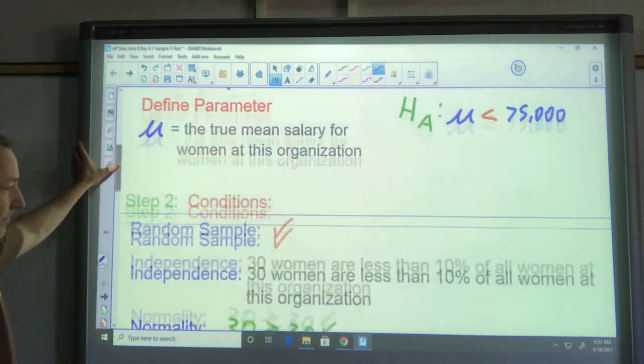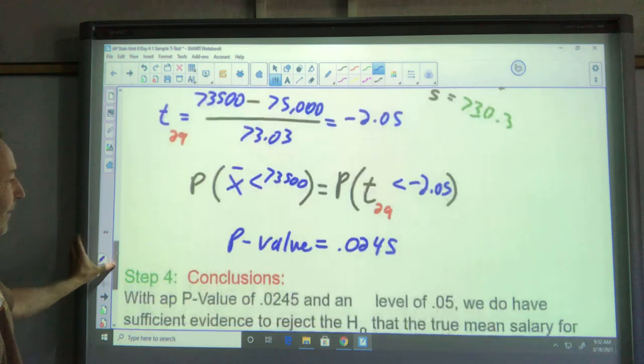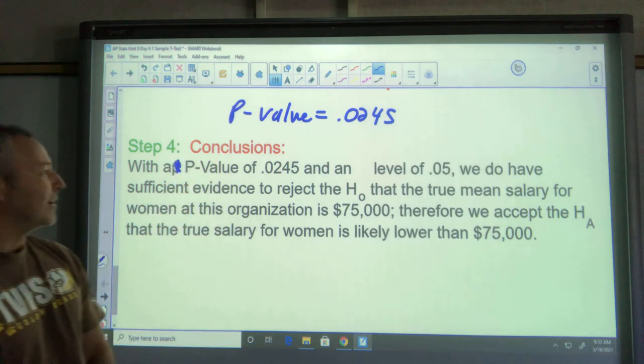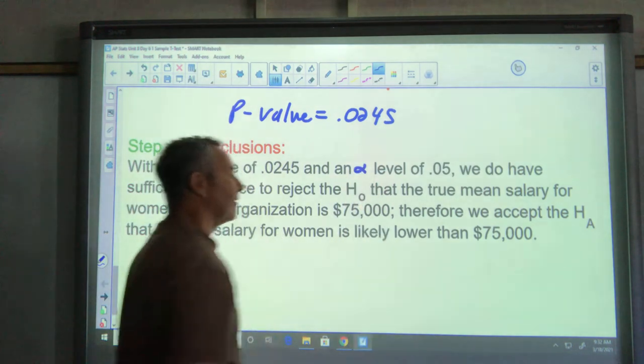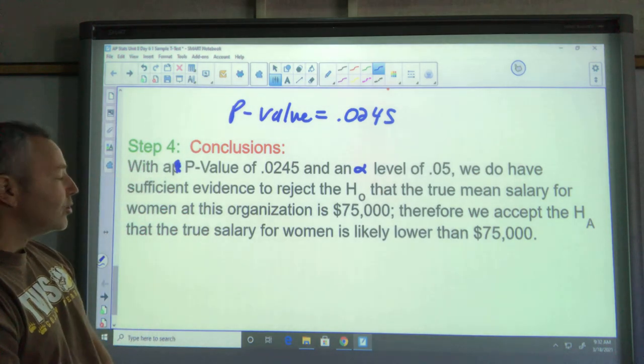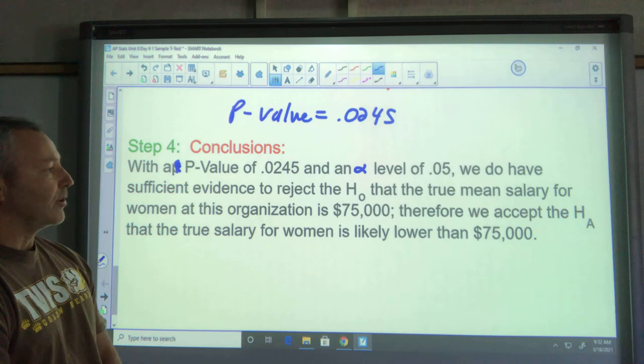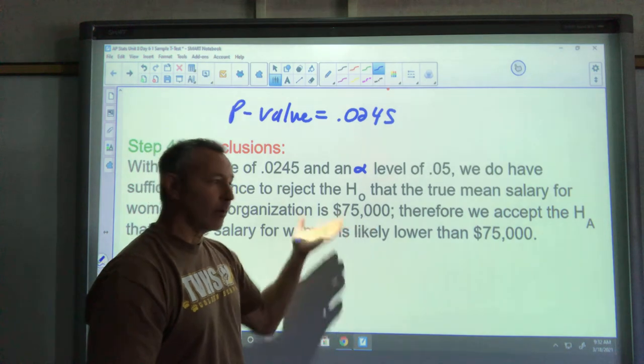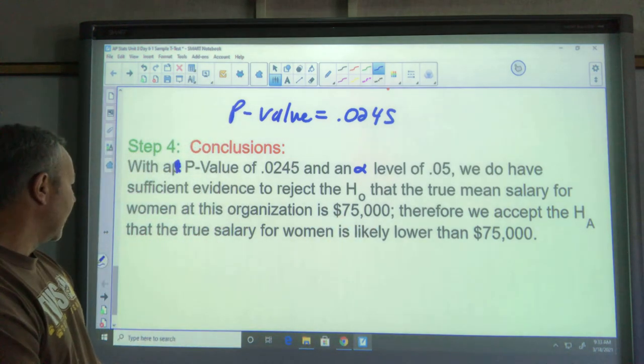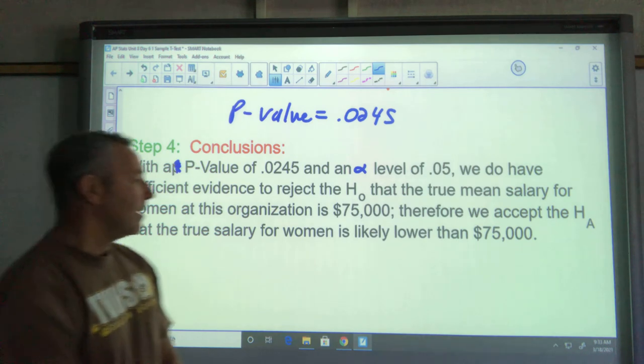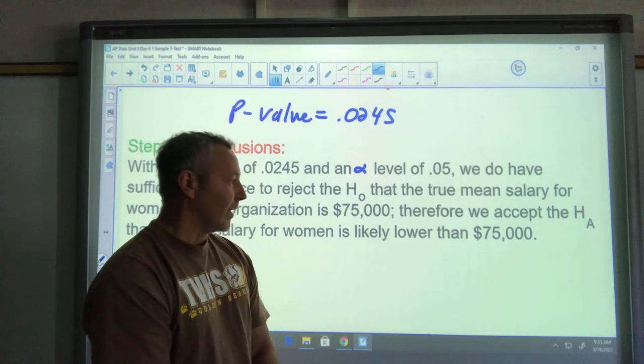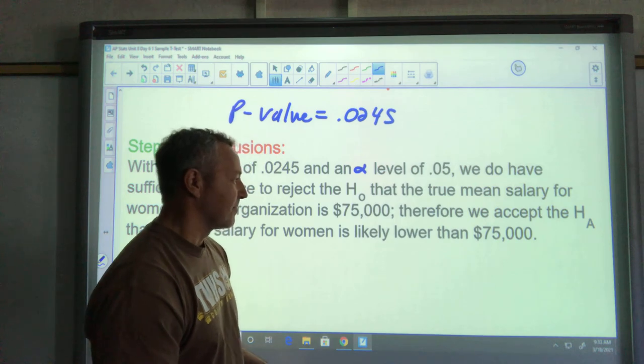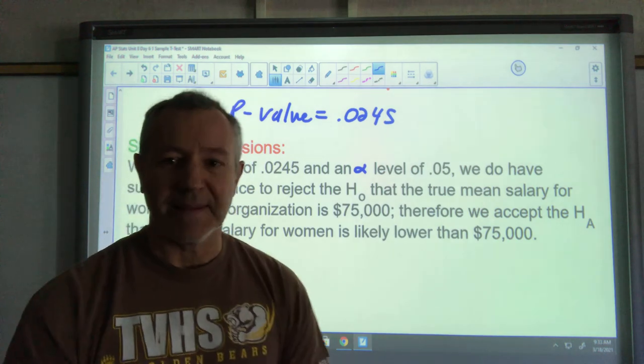Let's go down and state our conclusion. I've typed it up because I write horribly and it would take me forever. With a p value of 0.0245 and an alpha level of 0.05, we do have sufficient evidence to reject the null that the true mean salary for women at this organization is 75,000. That's putting it in context. Therefore we accept the H_a that the true salary for women is likely lower than 75,000. We're not sure it's under 75,000 so we're going to put that extra statement of caution in there. And that is our one sample t-test, thank you very much.